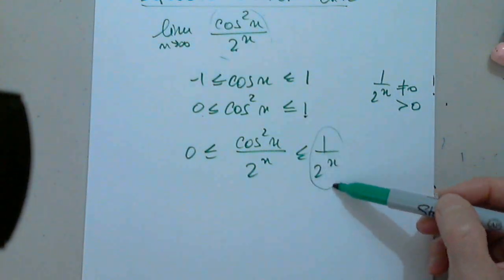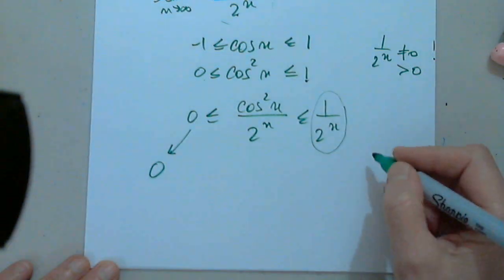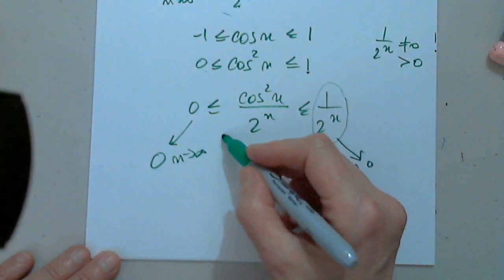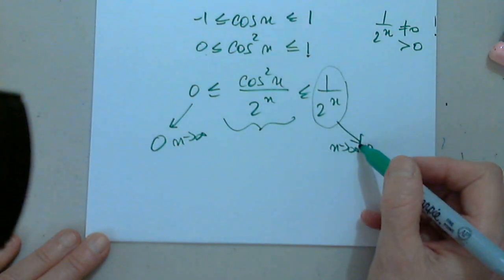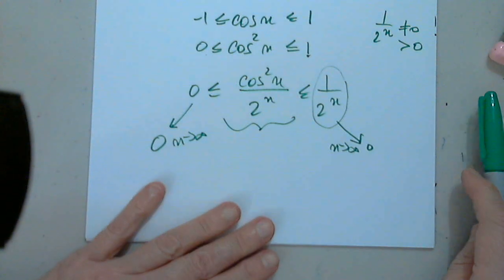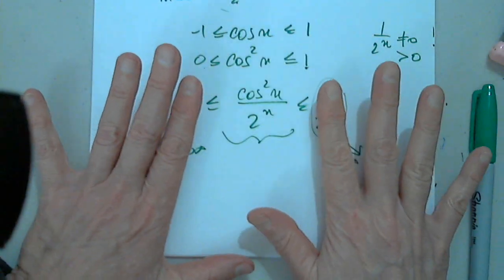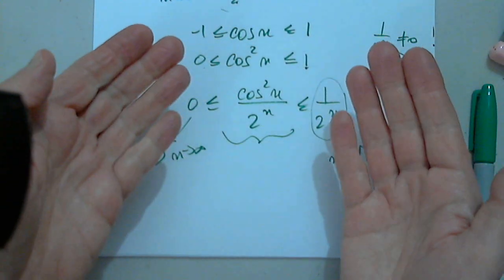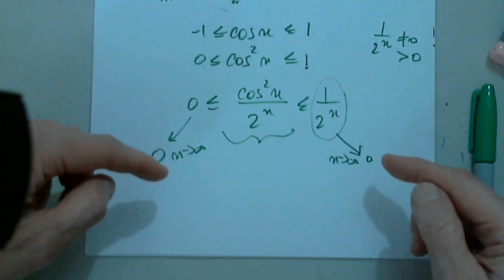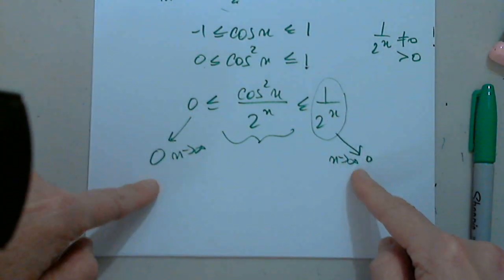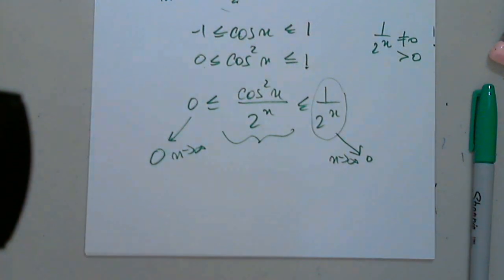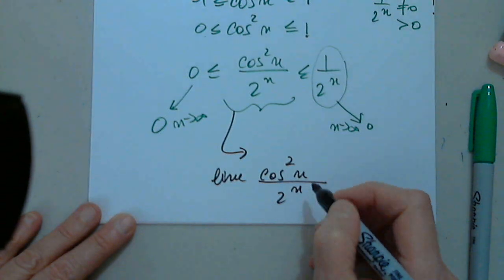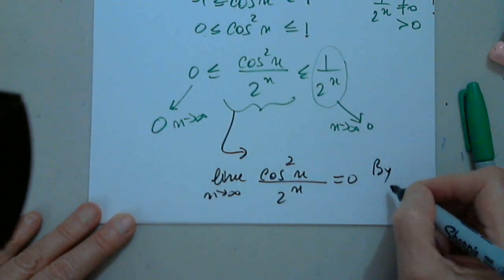Both sides approach 0 as n approaches infinity. By the squeeze theorem, the middle part must approach the same number. The first hypothesis of the squeeze theorem is that the function is squeezed between two functions: the lower bound is 0 and the upper bound is 1 over 2 to the n. The second hypothesis is that both limits exist and are the same number. Therefore, the limit of cosine squared n over 2 to the n as n approaches infinity is also 0 by the squeeze theorem.